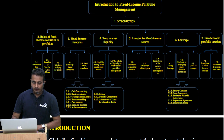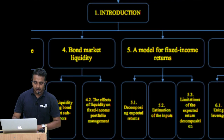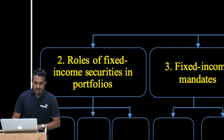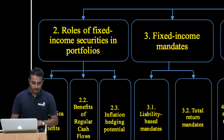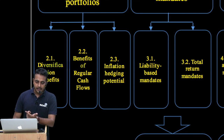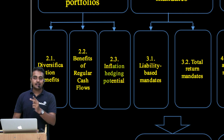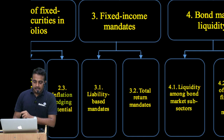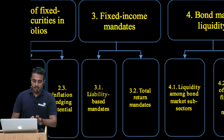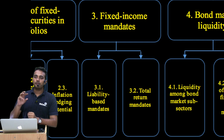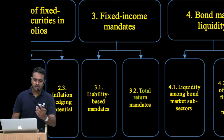This is roughly your syllabus for this particular reading. Section one is introduction, which is fairly basic. Section two covers the role of fixed income securities in the portfolio — why do we even need fixed income, what role do they serve — with three subsections: it provides diversification, it gives you regular cash flows (it pays a coupon on a regular basis), and it has potential for inflation hedging. Section three covers different mandates: when you recruit a fund manager, you tell him either manage money so that my liabilities are taken care of — think defined benefit plans — or manage money to maximize investor returns, which could be total return mandates.